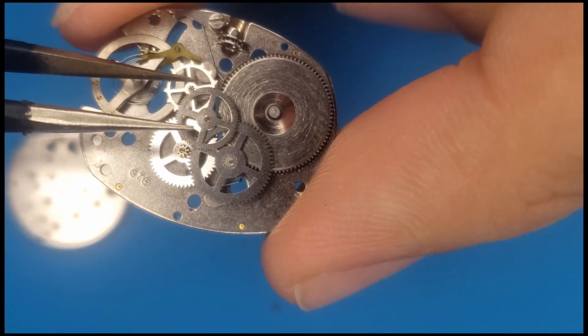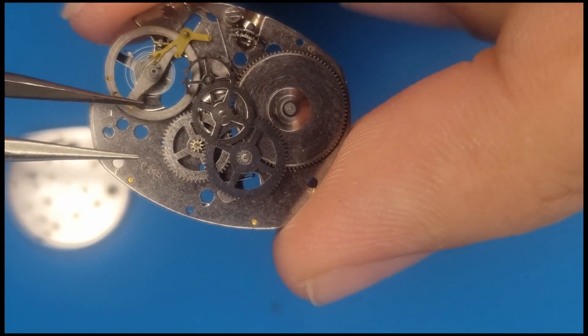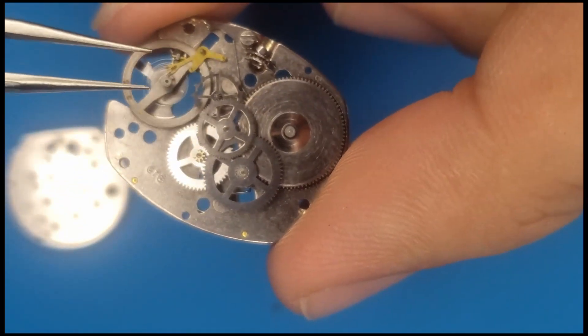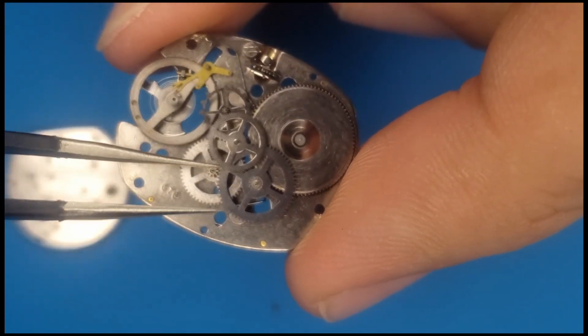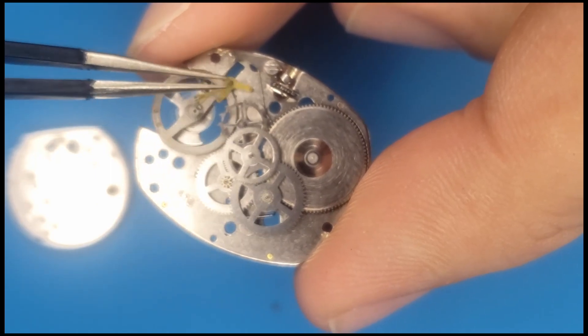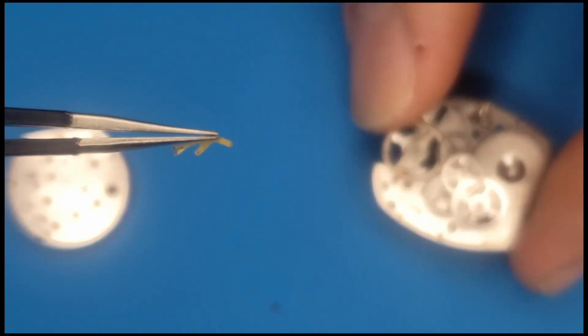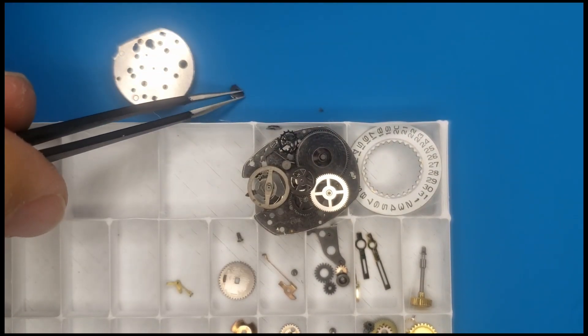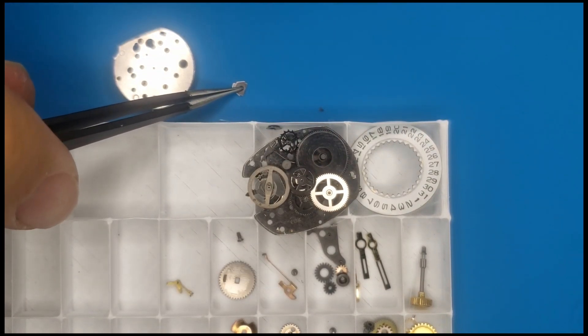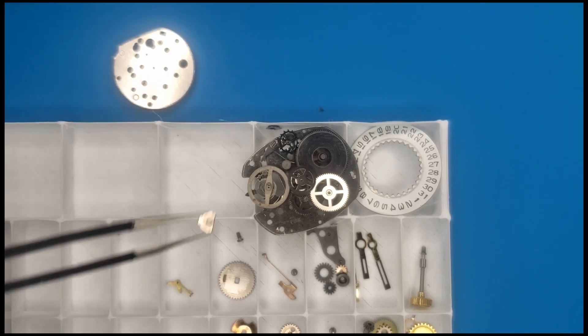And then, nope, I immediately get the anchor out of position. So, yeah, just like that. Time to just finish disassembly. A little bit of the keyless works there. So, there goes the anchor. Just pull that out first because it's convenient. Bring this around to work on so I don't smash that seconds hand pinion. The keyless works a lot too.